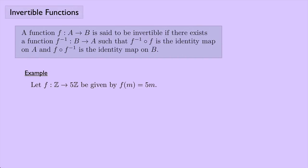Let's look at an example. Suppose F is the function from the set of integers to 5Z — five times the set of integers — given by F of M equals 5M. Just to remind you, 5Z is the set that looks like: negative 15, negative 10, negative 5, 0, 5, 10, 15, and so on. That's the set we're talking about.